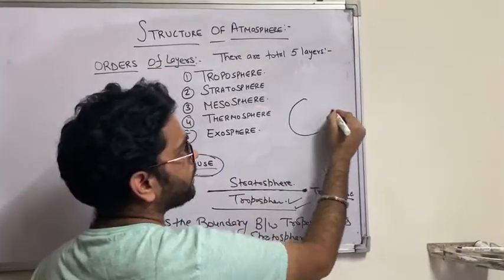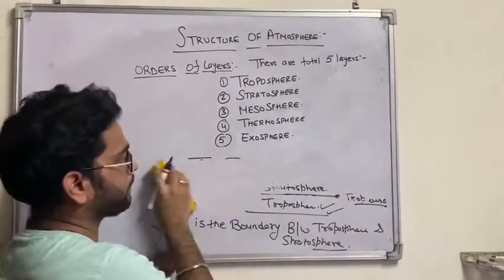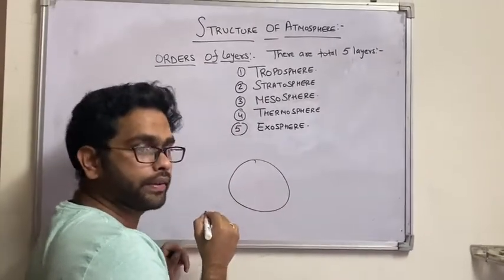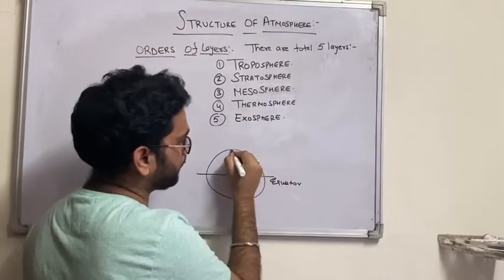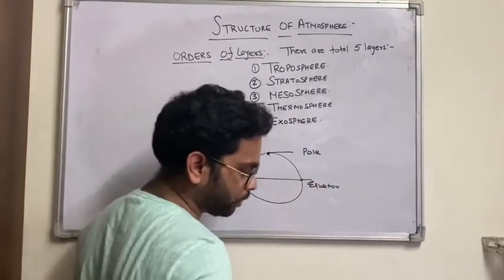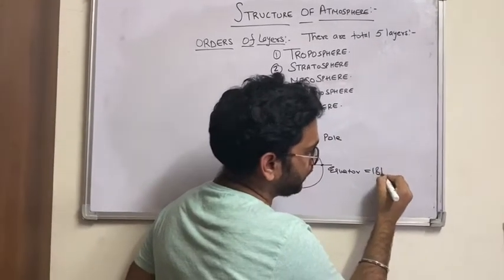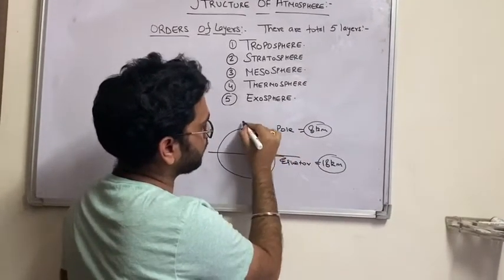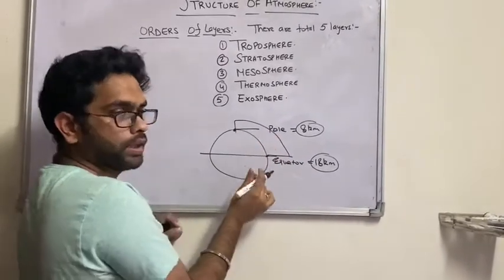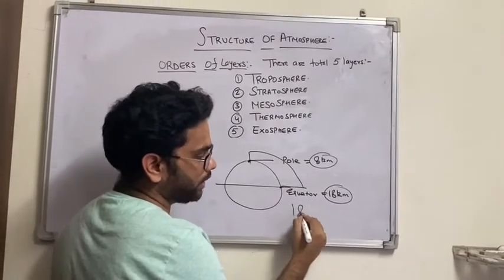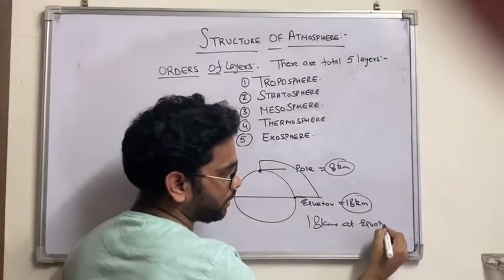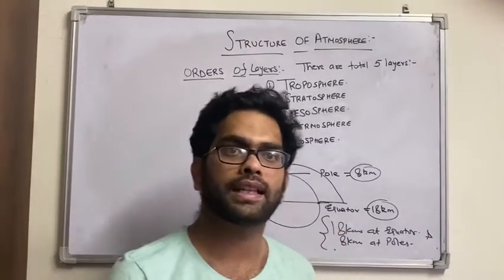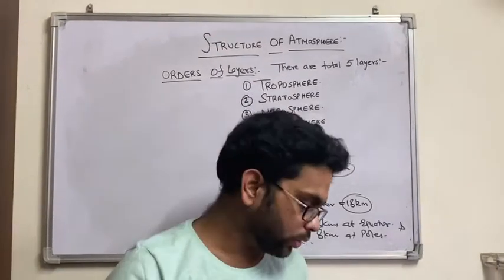The height of the troposphere varies. If you are standing on the equator, the height of the troposphere is 18 kilometers. At the poles, the height is 8 kilometers. So from equator to pole, the height decreases — 18 kilometers at the equator and 8 kilometers at the poles. I hope you are clear with this.